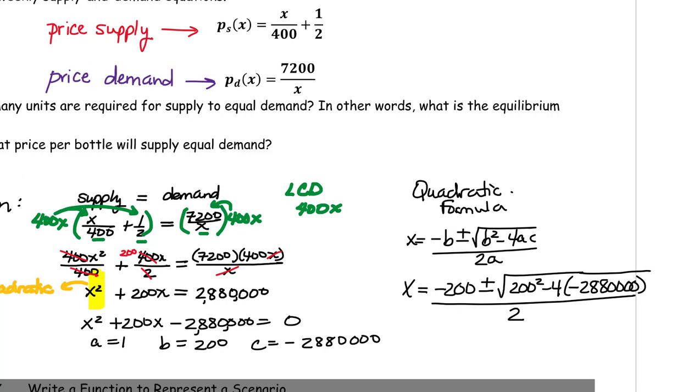To simplify this expression, you want to observe the correct order of operations. You're going to work inside of the square root that's acting as a grouping symbol, doing your exponent first, and then your multiplication, and then your addition or subtraction. So when we square 200 and then add 4 times 288,000, we get 11,560,000. The square root of that is 3,400.